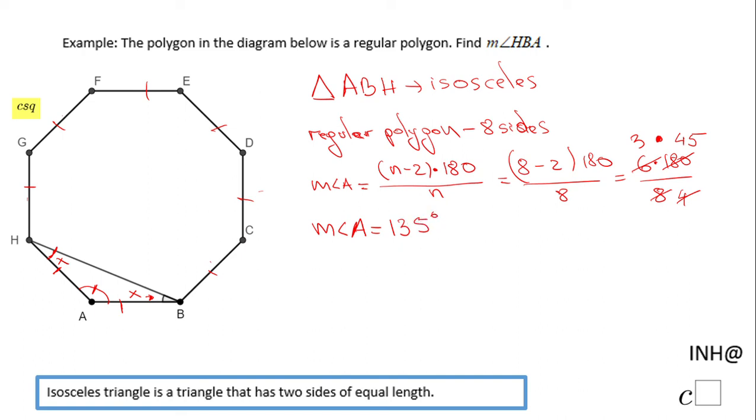And then, like I said, we can write this equation: the measure of angle A plus the two X's, angle HBA and angle AHB, is 180. Why? Because the sum of the interior angles of a triangle is 180. We're gonna replace the measure of angle A: 135 plus 2X equals 180. We're gonna subtract 135 from both sides.